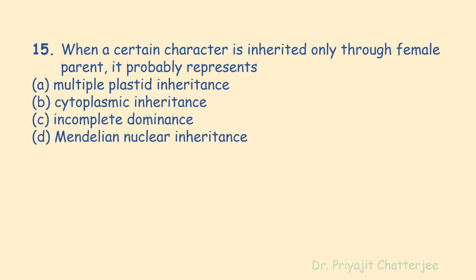The next question: when a certain character is inherited only through the female parent, it probably represents — options are multiple plasmid/plastid inheritance, cytoplasmic inheritance, incomplete dominance, or Mendelian nuclear inheritance. The correct answer is cytoplasmic inheritance. Chloroplasts and mitochondria contain genes transmitted from parents to offspring along with the cytoplasm of the contributing gamete. These genes are called plasma genes or extranuclear genes, collectively called the plasmon, resulting in cytoplasmic or extranuclear inheritance.